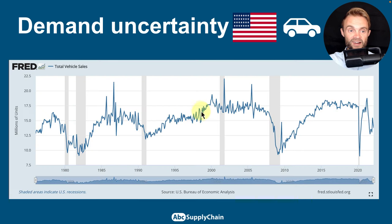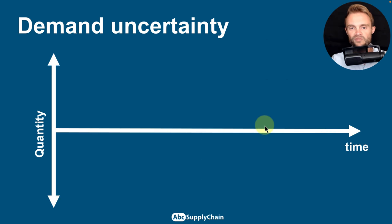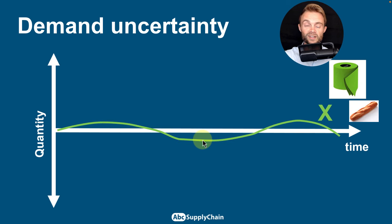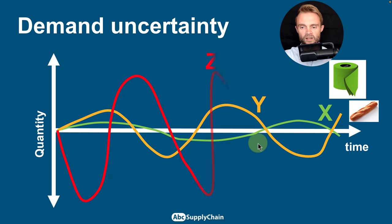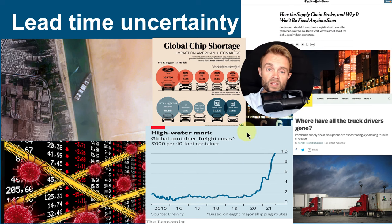Looking at US market sales data, demand is not a straight line and is not always predictable. During the last pandemic, we saw a crash of around 100% followed by a sales spike of 120%. Some products have very predictable demand — like toilet paper or French baguettes — while others like umbrellas are highly unpredictable. You need safety stock to face this demand uncertainty.